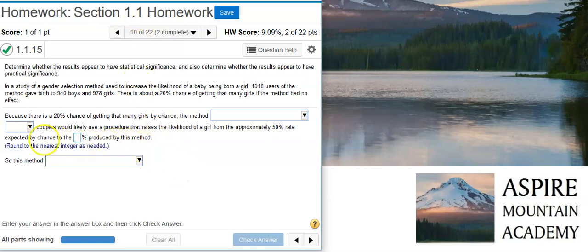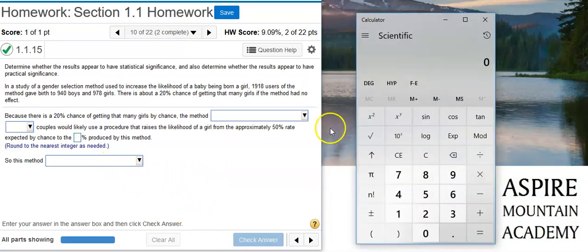So what we need to do here is fill in the right selections for each of the different blanks in this statement that's been written for us. The first thing we're going to do to evaluate what's going on is calculate what we actually have in our sample.